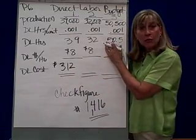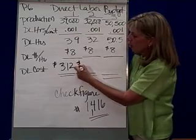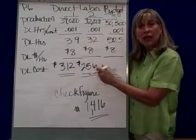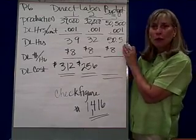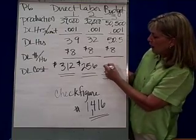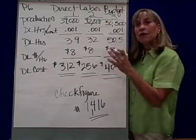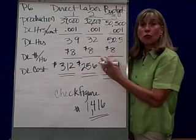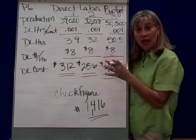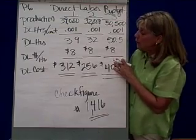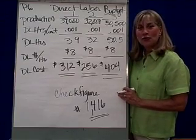In the second quarter, 32 hours for making bottles of water at $8 an hour, so $256 is what I would budget for direct labor cost in the second quarter. In the third quarter, 50.5 hours times $8 is $404, budgeted for direct labor in the third quarter. If you were to continue P6 through the rest of the year, your check figure is $1,416 for total direct labor costs.